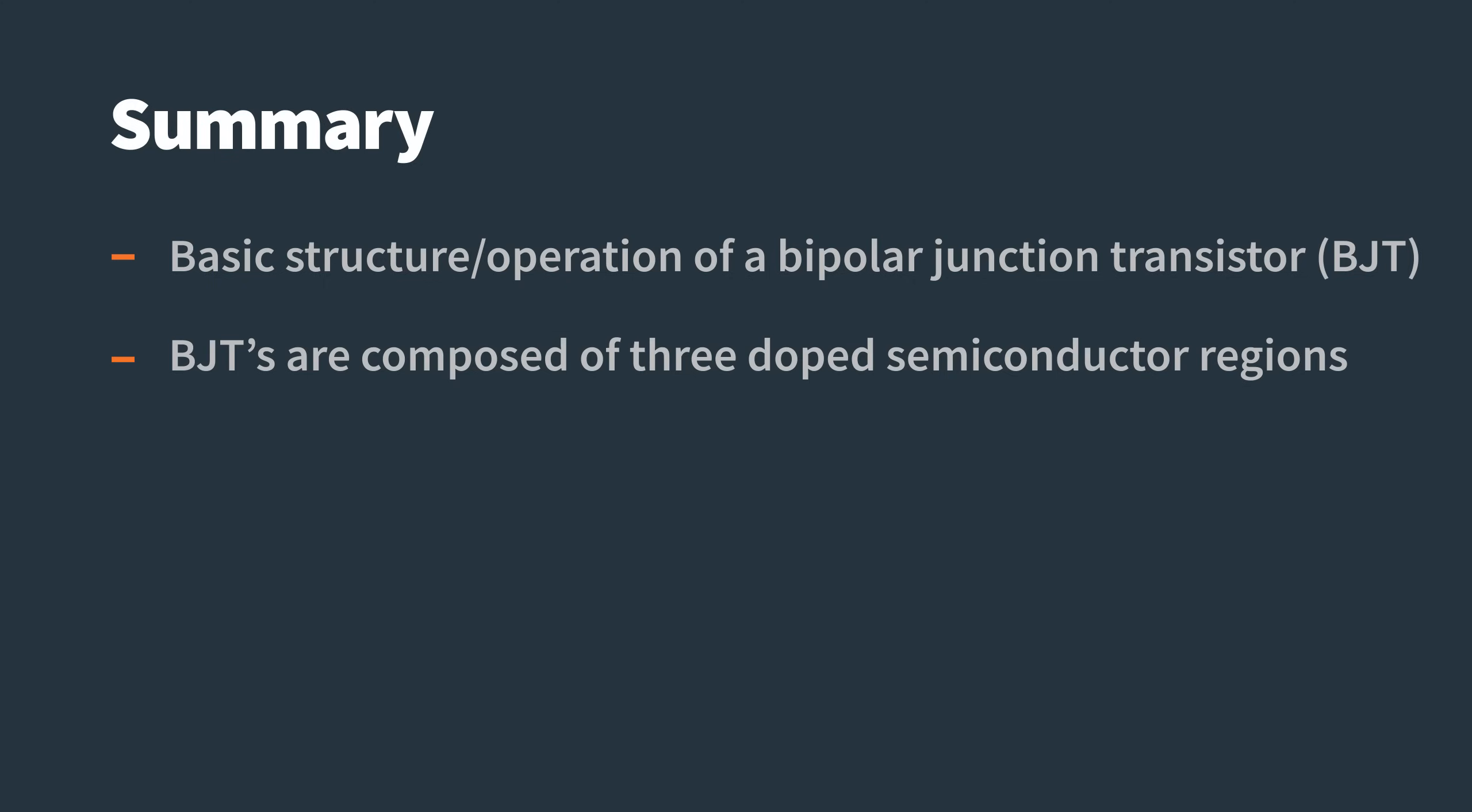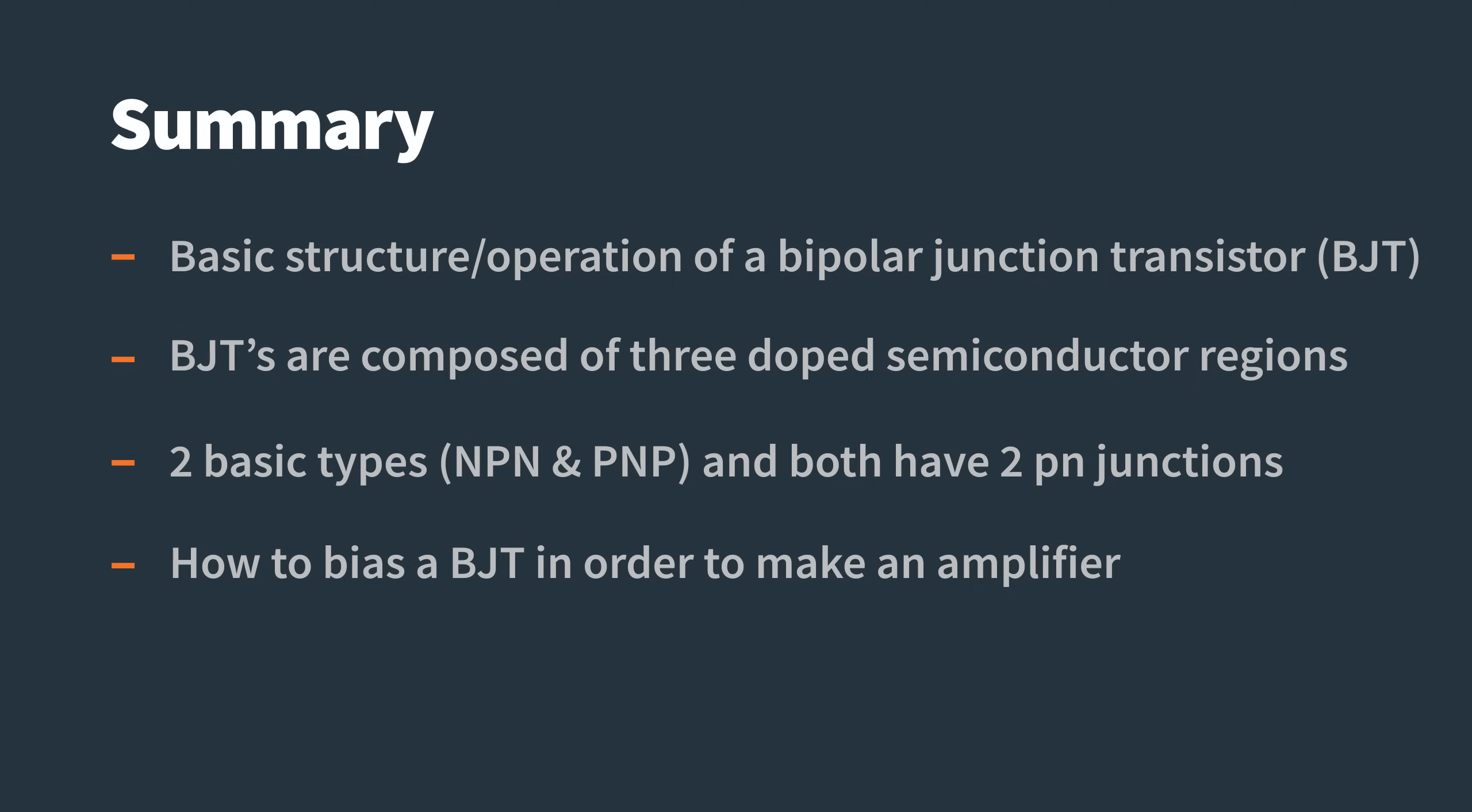In this video, we've discussed the basic structure and the basic operation of a bipolar junction transistor, or BJT. We learned that a bipolar junction transistor is composed of three doped semiconductor regions, has two basic types, NPN and PNP, and both types have two PN junctions. We also learned how to bias a bipolar junction transistor in order for it to operate as an amplifier and discussed what's happening inside an NPN transistor.